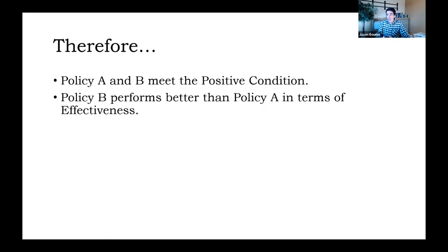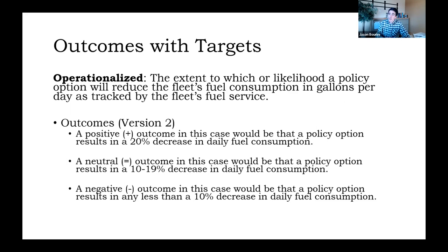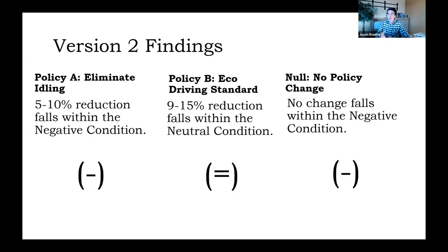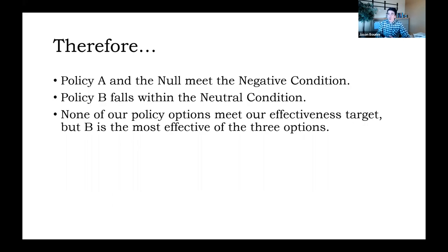Both Policy A and B meet the positive condition under the simple definition, though Policy B does perform better than Policy A. However, if I use the version with targets — positive is 20% reduction, neutral is 10%–19%, and negative is anything less than 10% — I find very different results. Policy A's 5%–10% reduction falls within the negative condition. Policy B falls within the neutral range. Not changing anything also falls in the negative range. Policy B is the most effective of the three, though none actually meet the effectiveness target.